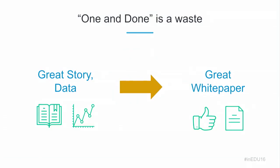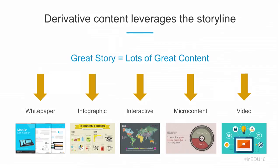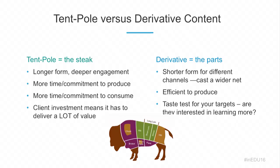Tip number one: using every part of the buffalo in content marketing. The scarcest resource is a great data set and a great narrative — once you find those, you don't want to waste it all on one piece of content. One-and-done is what we see a lot of, and it's a waste. We encourage derivative content: take that core piece, chop it up into lots of different formats for different channels and audiences, and get a lot more leverage out of that story. The number one complaint from customers is they can never keep up with the constant demand for content.